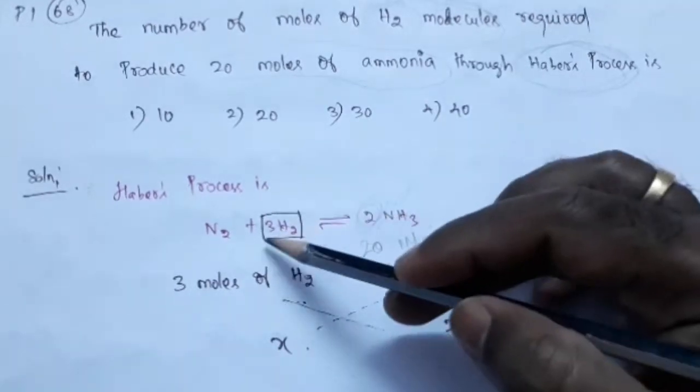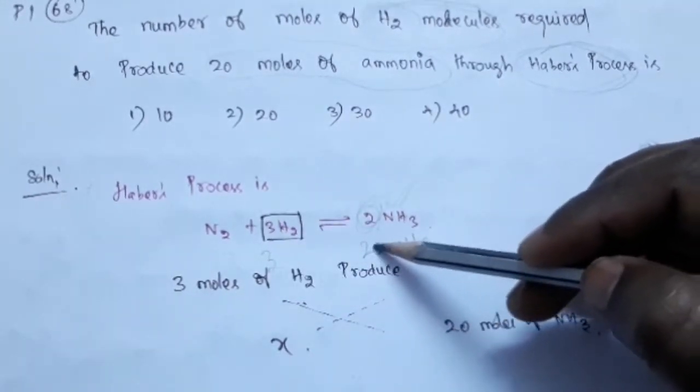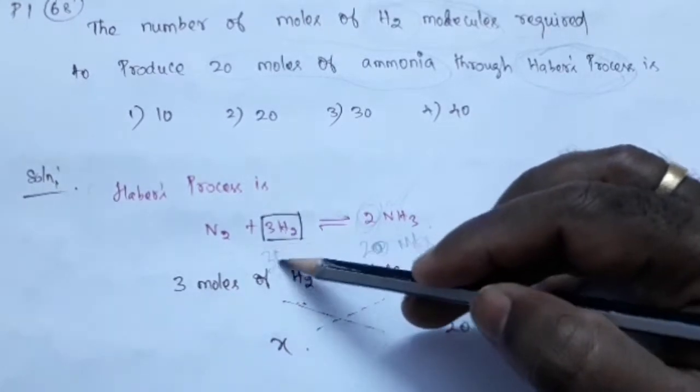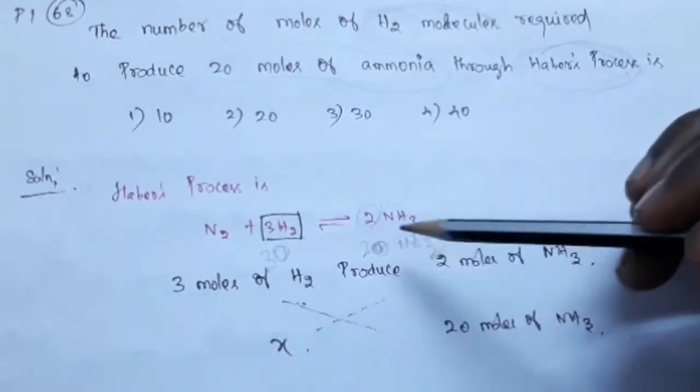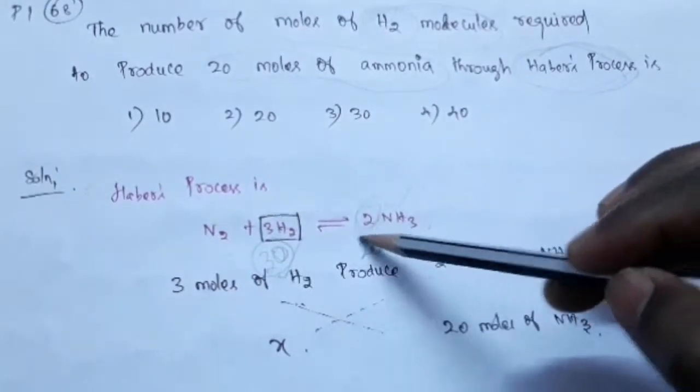Here already 3 is there. Here we have put zero. Here also you put zero. So the answer will come. For 20 moles we need 30 moles of H2.